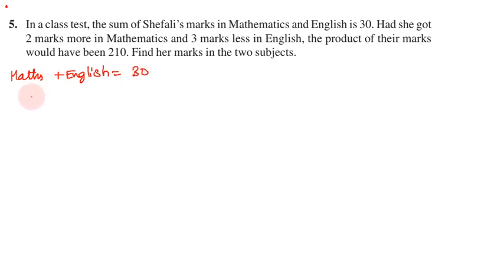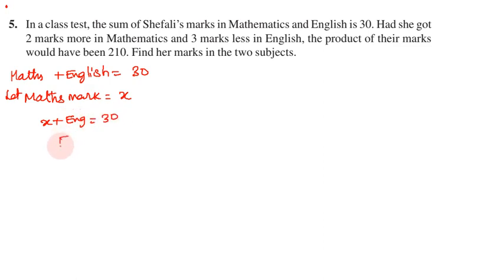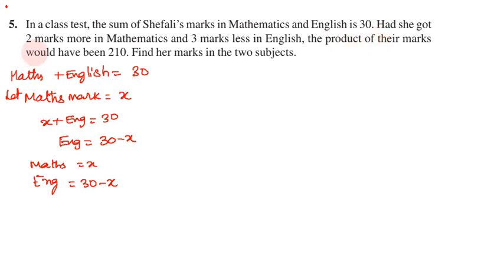Let the math mark be x, so in terms of x, the math mark is x. If you add 2 marks to the math mark, then the product is 210. The math mark will be x plus 2, and the English mark will reduce by 3.